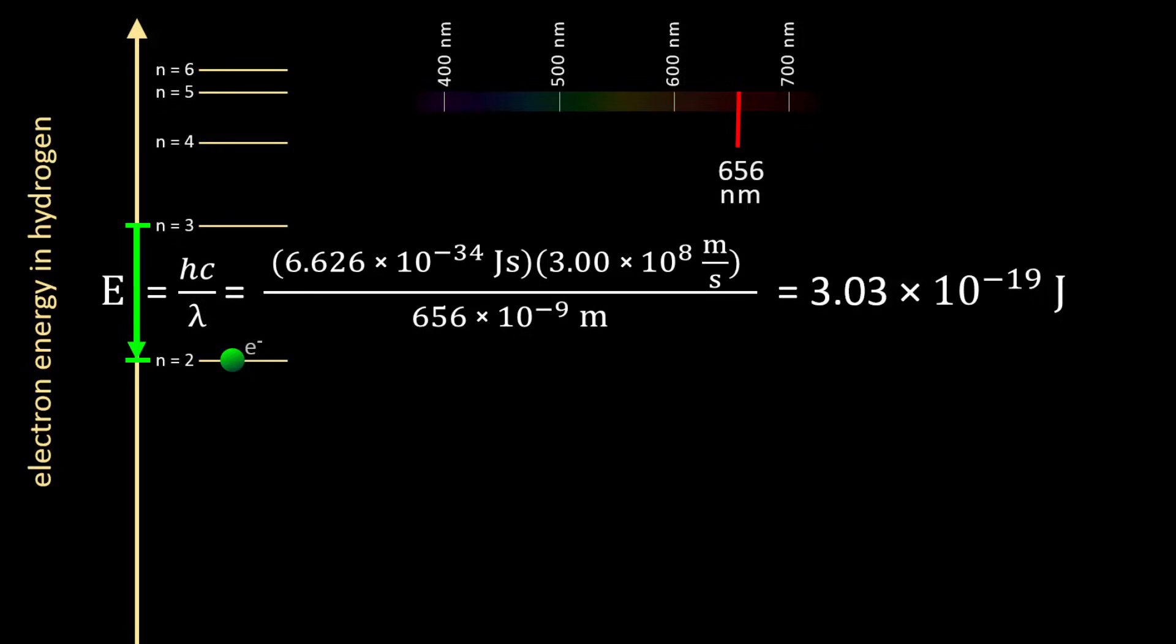Planck's constant h times the speed of light c divided by the wavelength, here expressed in meters to keep units constant, gives a photon energy of 3.03 times 10 to the negative 19 joules.